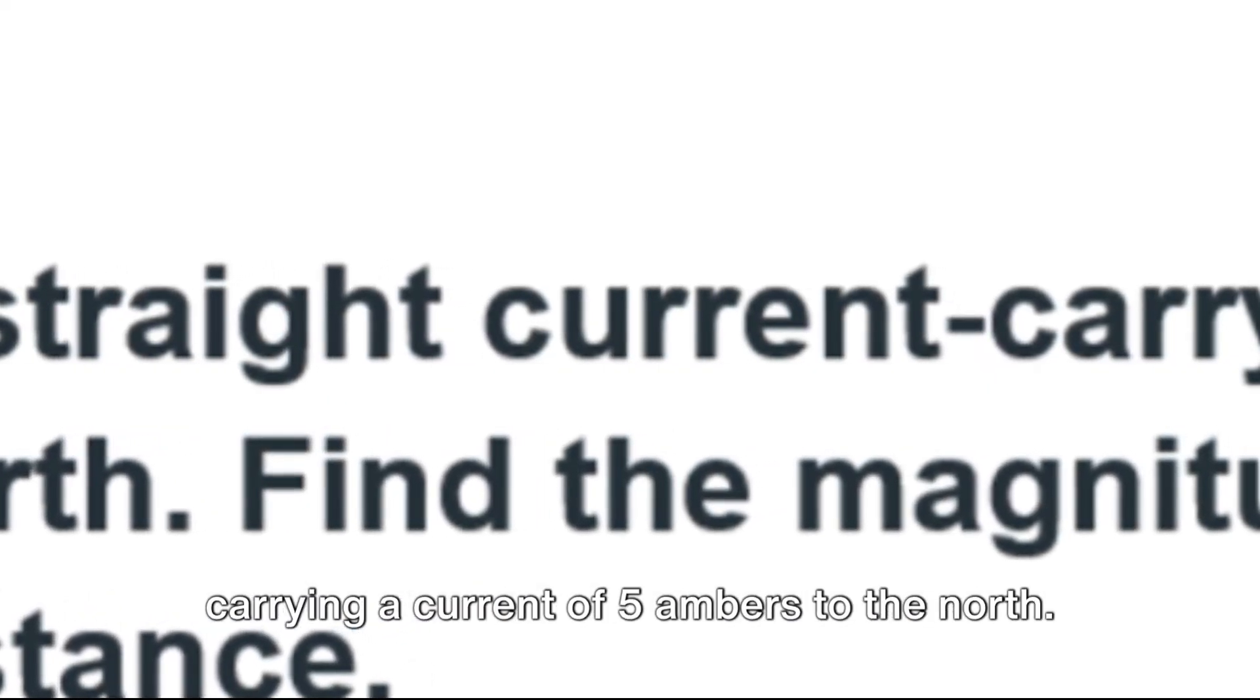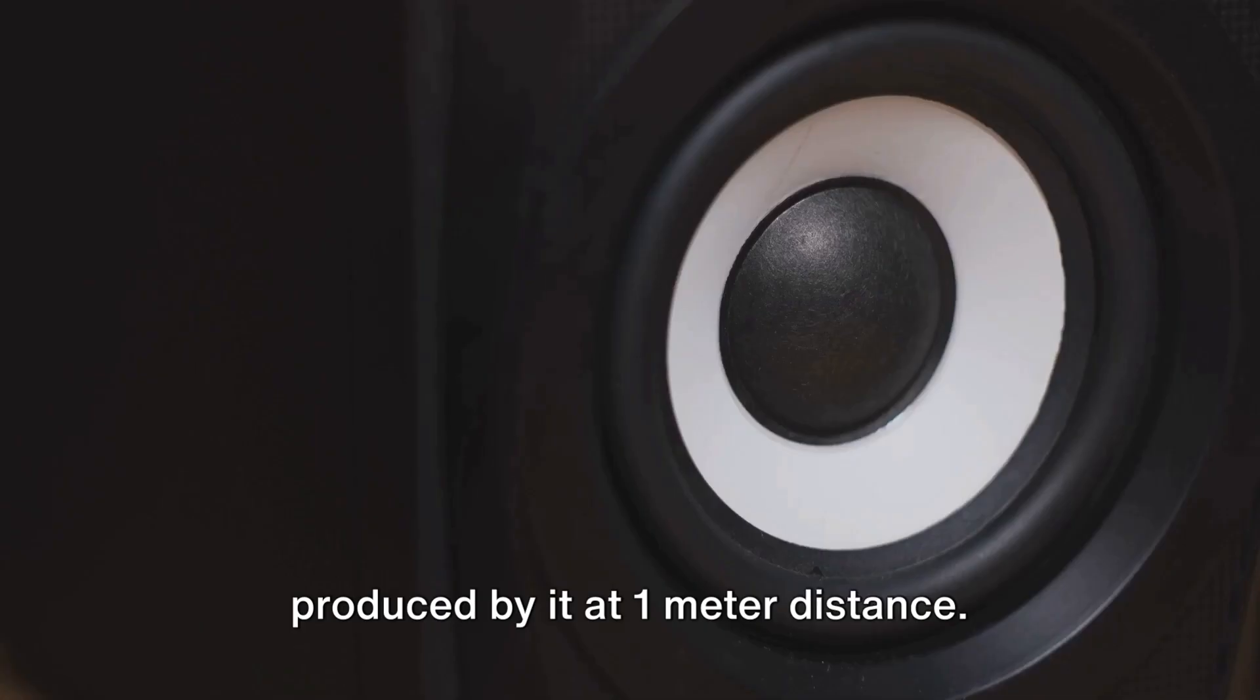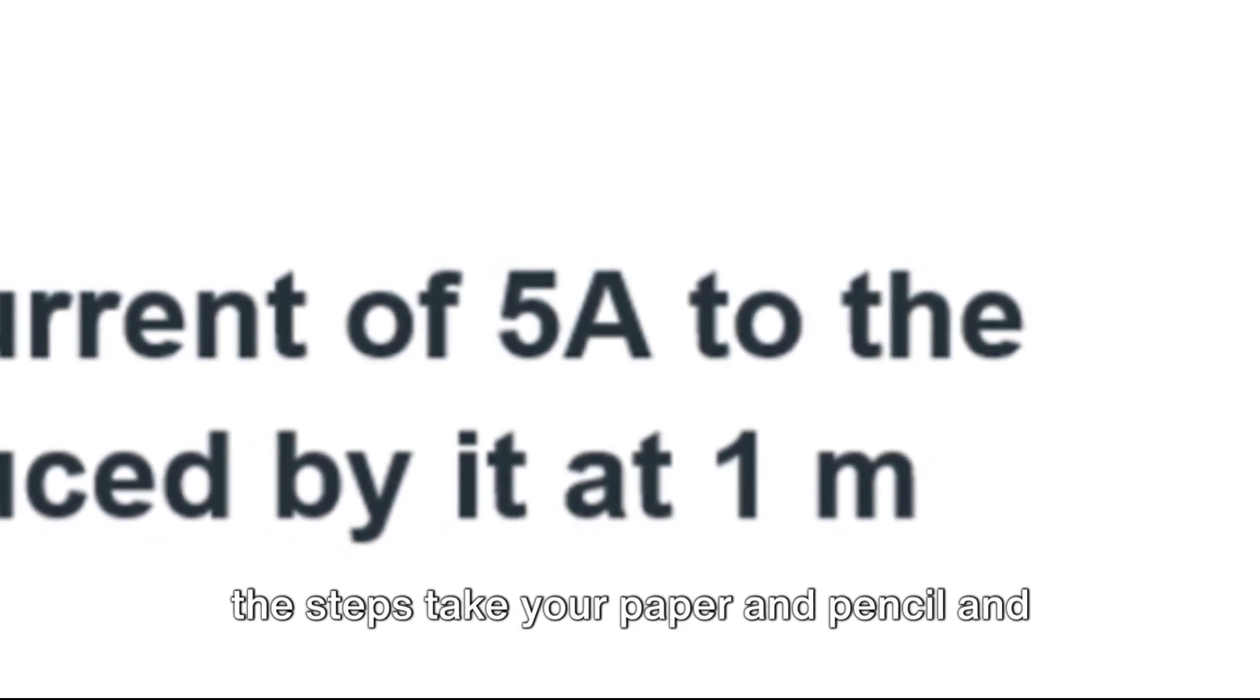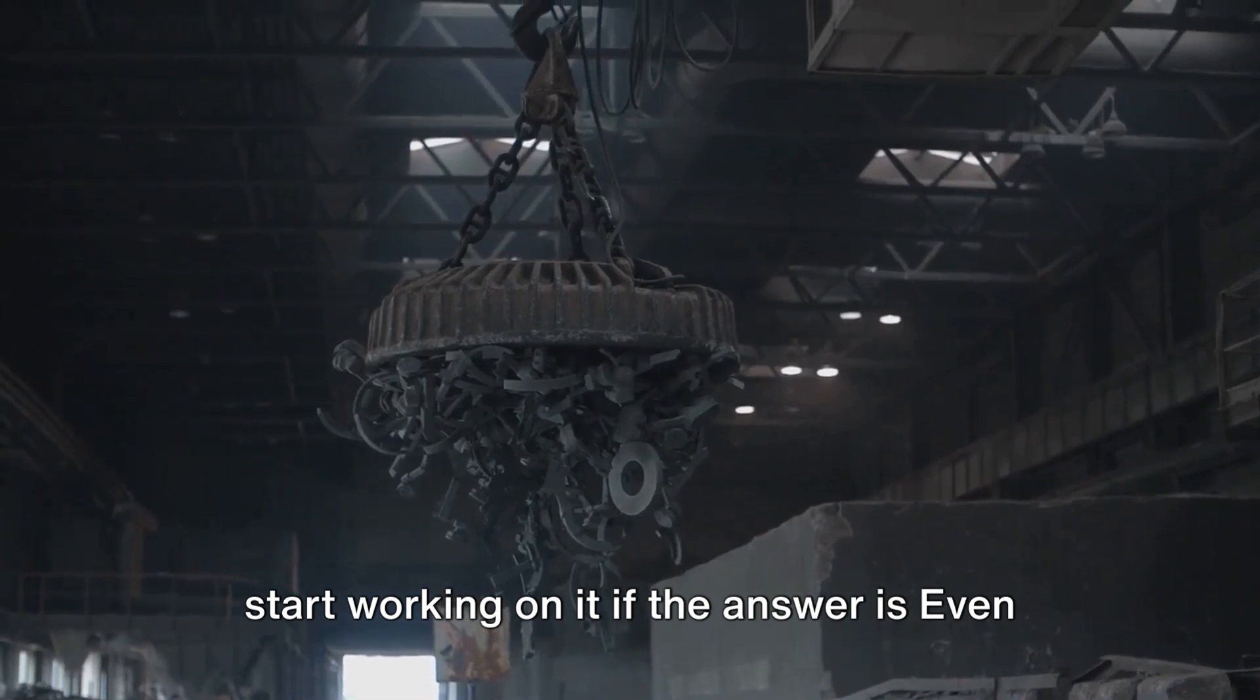A straight current carrying conductor is carrying a current of 5 amperes to the north. Find the magnitude of the magnetic field produced by it at one meter distance. As the previous example, you should follow the steps. Take your paper and pencil and start working on it.